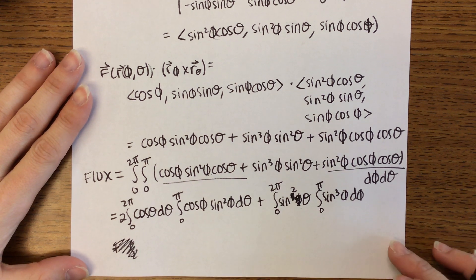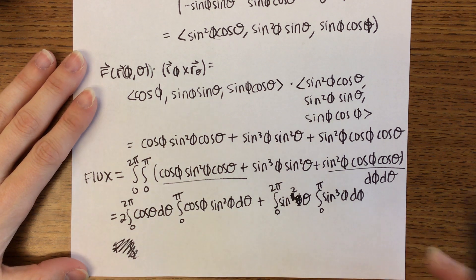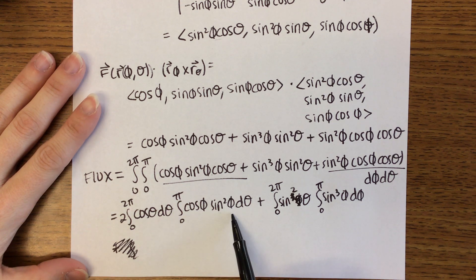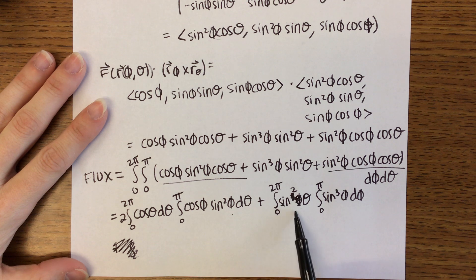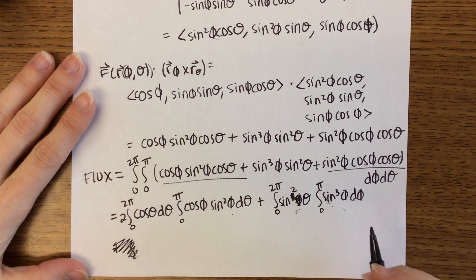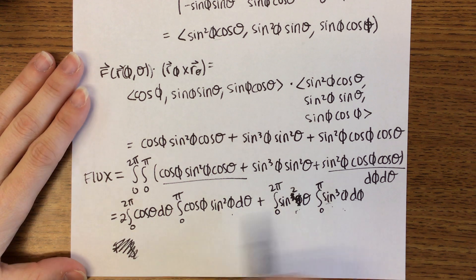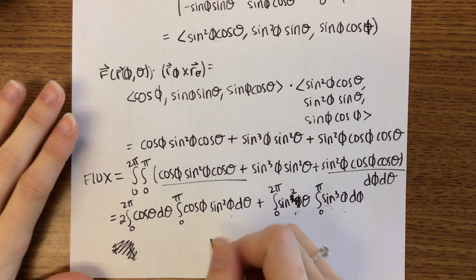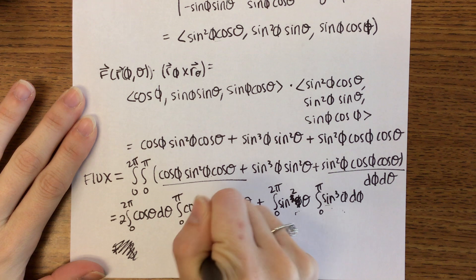Can you guys integrate all of these on your own? This one's a u-substitution, this one uses double angle, and this one uses one minus sine squared. The answer ends up being 4π/3.